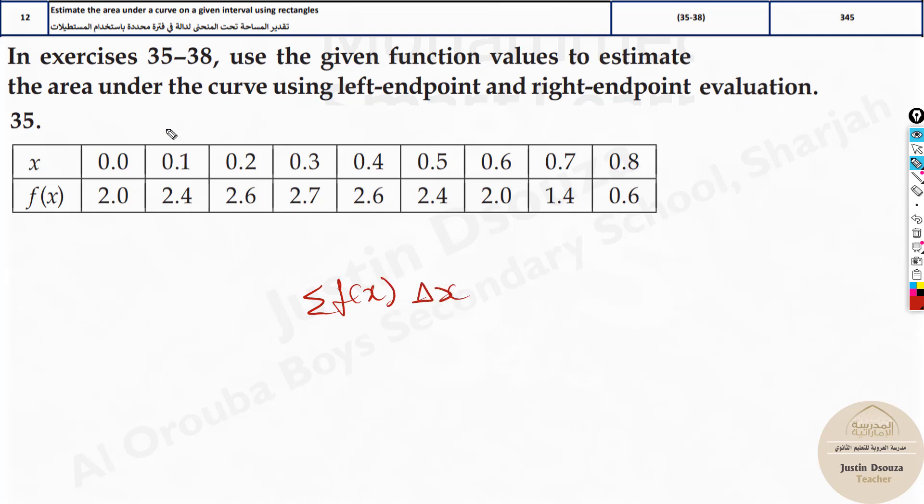Now what is this delta x? It is the interval. Look at the interval, the jump. It is 0.1 between each. So there are how many intervals? If n values are given, n minus 1 intervals. That's why we leave one value, but in the left endpoint we leave the rightmost value because we start counting from the left side.